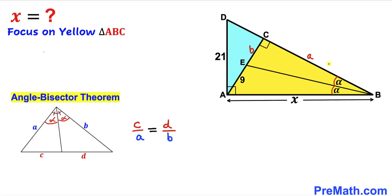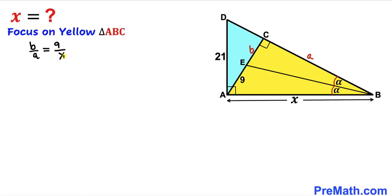We apply the angle bisector theorem to the yellow triangle since we have angle alpha and angle alpha. This gives us the proportion b divided by a equals 9 divided by x. Let's call this equation number 1.